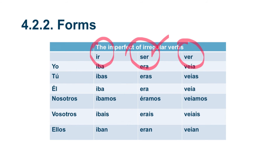I want you to notice here that íbamos and éramos have an accent. There is an accent in the nosotros form — the first person plural in the imperfect. And now for ver, an IR type verb: yo veía, tú veías, él veía, nosotros veíamos, vosotros veíais, and ellos veían.